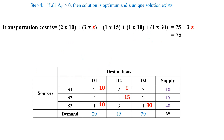Since all delta-ij values are greater than 0, the solution is optimum and a unique solution exists. The transportation cost equals 2×10 plus 2×epsilon plus 1×15 plus 1×10 plus 1×30, which equals 75 plus 2 epsilon. Since epsilon is a very small value, we neglect it, and the transportation cost is 75 rupees. This is the final optimum solution.